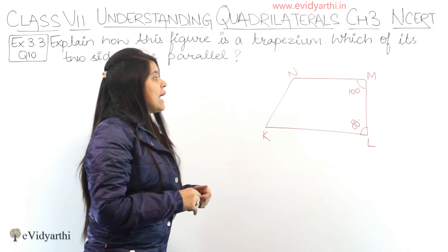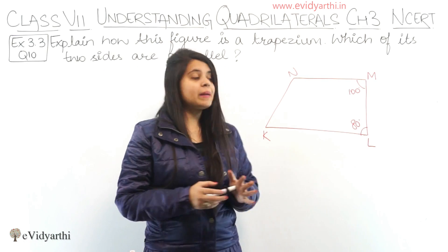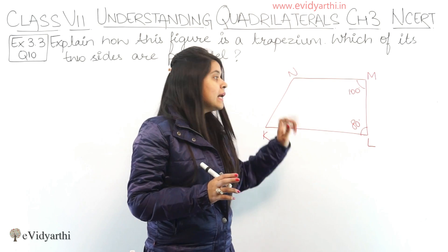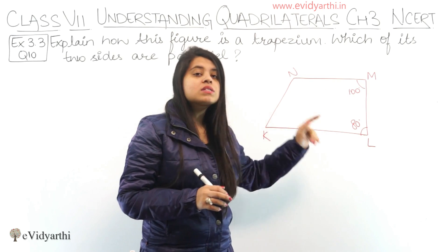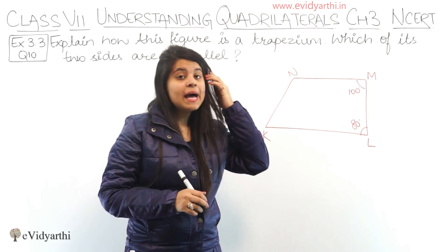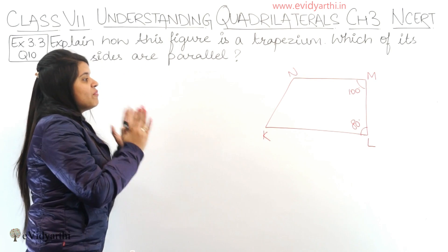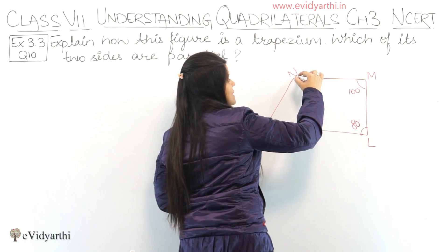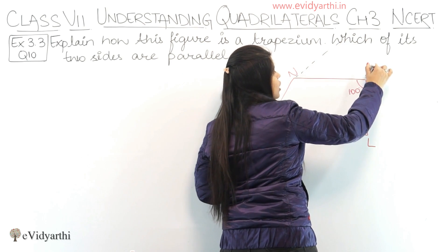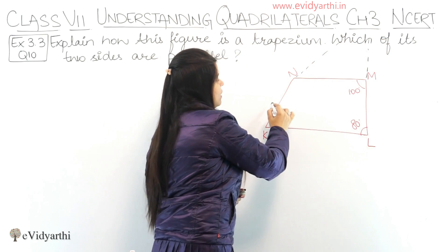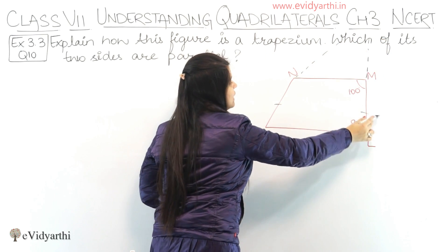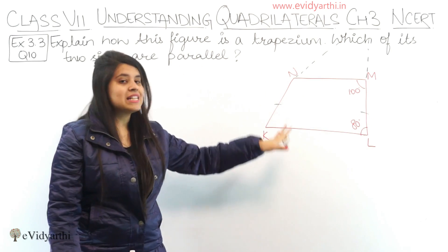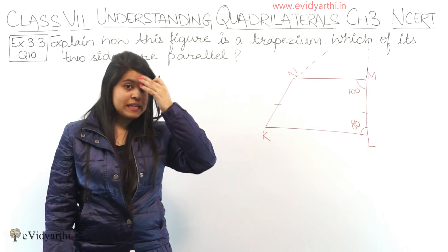We know that the property of a trapezium is that either of its two sides are parallel. Here I am going to identify which two sides are parallel. If we look at the figure, it can be observed that if I extend the lines further, at some point those two lines would intersect. We can use this imagination to help us prove it.